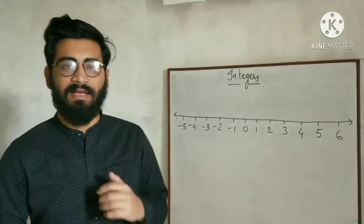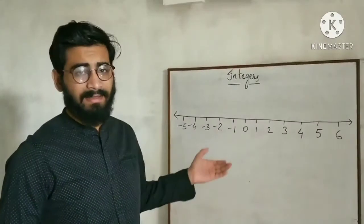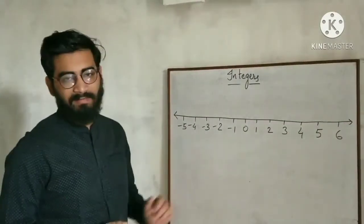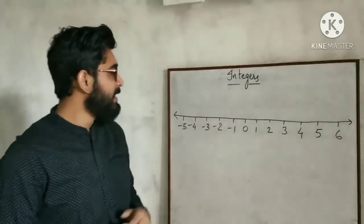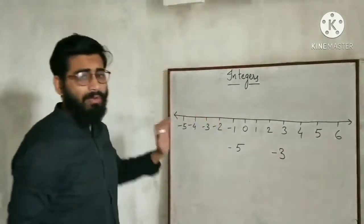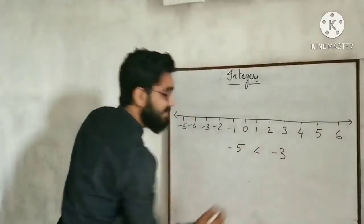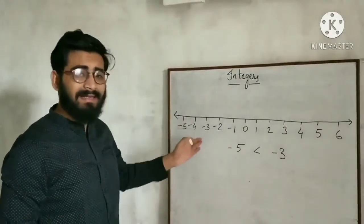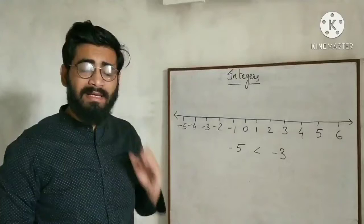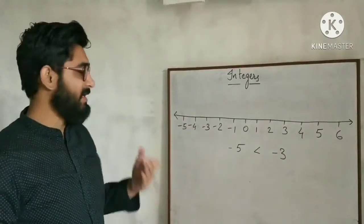Before discussing more questions from the exercise, look here. This is the number line. 0 is at the center. At the right side of 0, positive numbers are there, and at the left side of 0, negative numbers are there. If I ask you, which number is greater — minus 5 or minus 3? Minus 3 will be greater. Why? Because if you see on the number line, minus 3 is at the right side of minus 5, so minus 3 is greater.